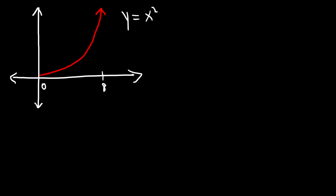Let's say we have the graph of y equals x squared. Let's focus on the right side of the graph. How can we calculate the area under the curve from 0 to 8? How can we determine the area of the shaded region? One simple way is by using rectangles. Let's use four rectangles to approximate the area. There are two ways: you could use a lower sum using the left endpoints, or an upper sum using the right endpoints for an increasing function.